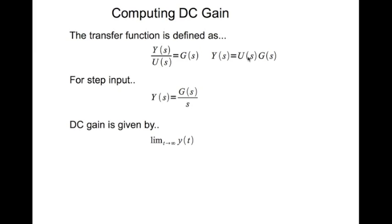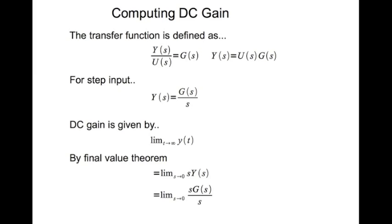Now DC gain by definition is given by the limit as t tends to infinity of y(t). From the final value theorem we can write this is equal to the limit as s tends to zero of s·y(s), which is the limit as s tends to zero of s times g(s) divided by s, which simplifies to the limit as s tends to zero of g(s).